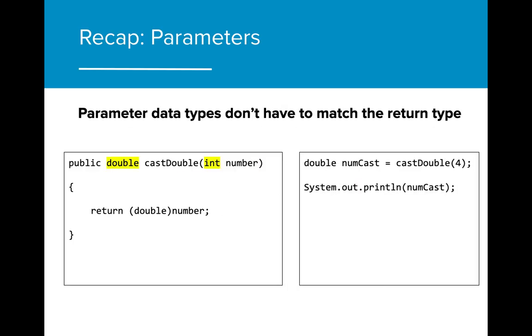When we write parameters, the data type does not have to match the return type. In this example, the formal parameter int number is passed into the method, and the return type that is being returned to the program is a double. As long as the return type matches the value being returned, parameters do not have to match the return type.